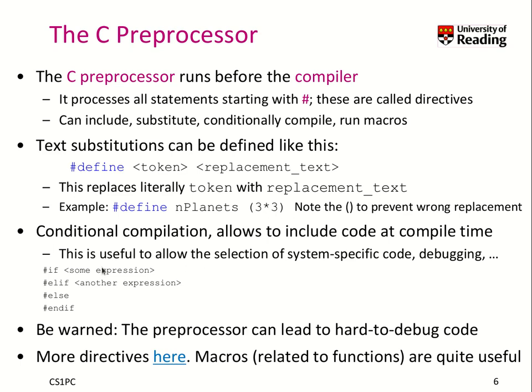Next, we have conditional compilation, which allows us to include code specifically based on options given by the user, such as debugging options. We can tell the compiler to include certain options that are then passed inside our program and evaluated with these conditional expressions. Or we can have system-specific code — depending on the architecture you work with, you may want to include some code and change the behavior of a function, for instance, to optimize it.